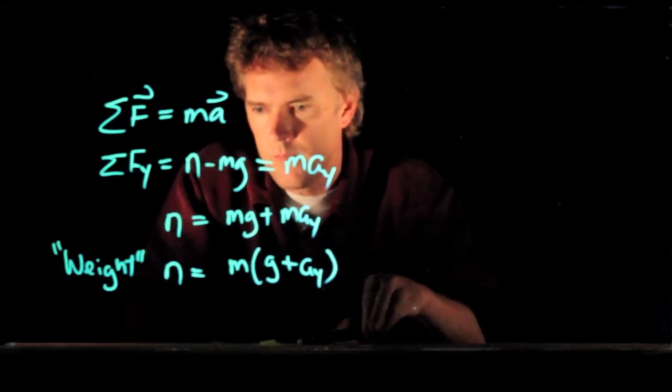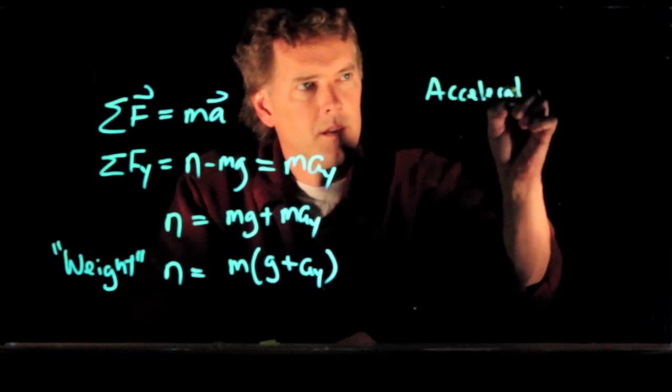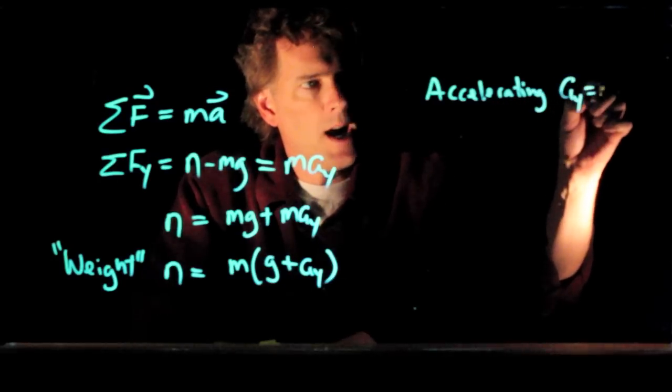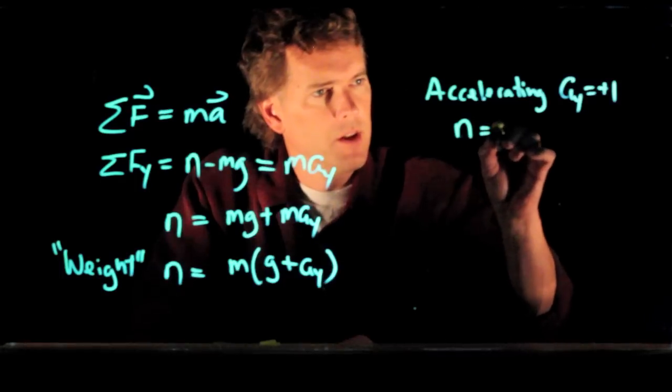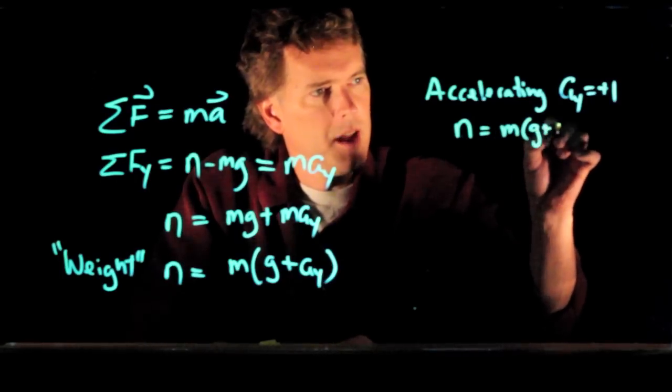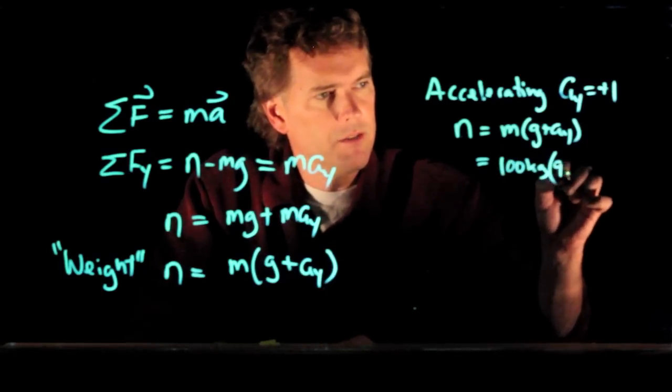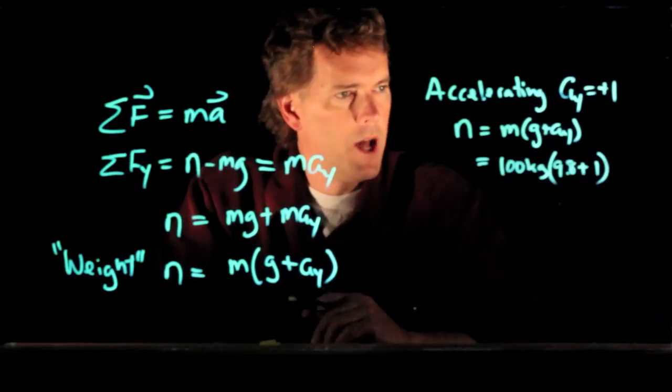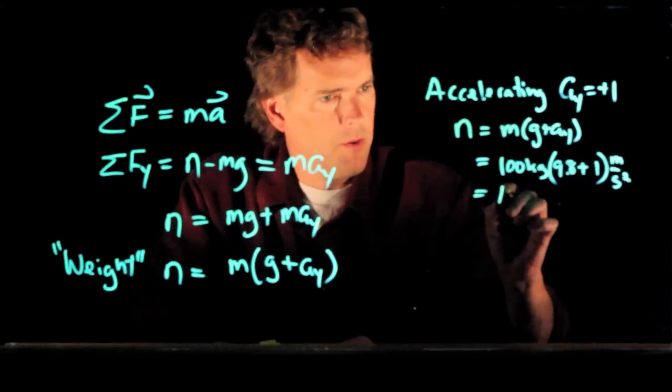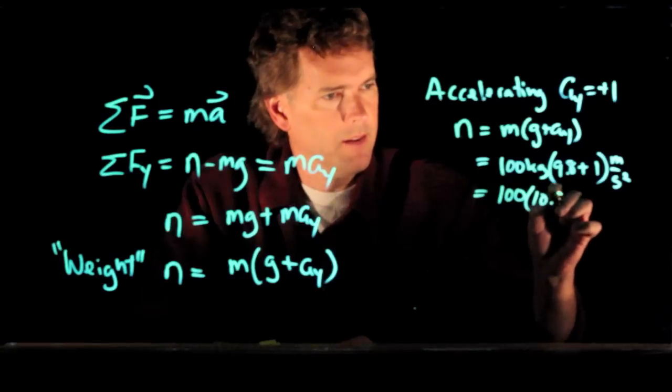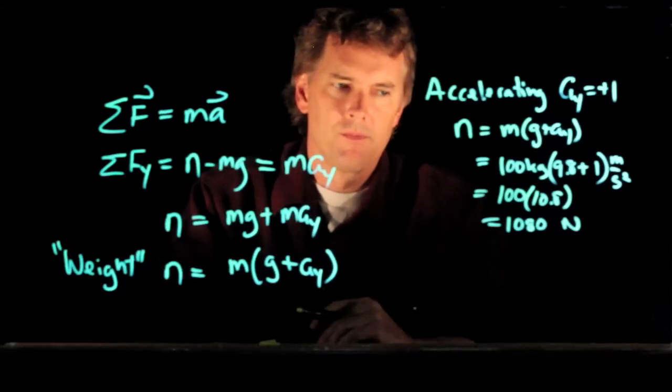So we said that the first condition was accelerating upwards. And we said AY is equal to plus one meter per second squared. So in that region, N is M times G plus AY. We said our mass was 100 kilograms. G is 9.8. We're going to add one. Both of those are meter per second squared. And if you run those numbers, you get 100 times 10.8, which is 1080 Newtons.